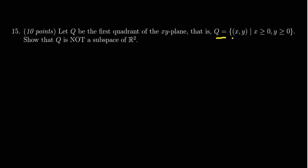That is, Q is the set of ordered pairs (x,y) where x is not negative and y is not negative. We want to show that Q is not a subspace of R².